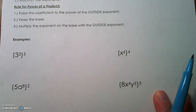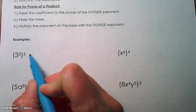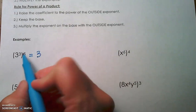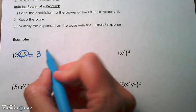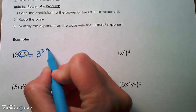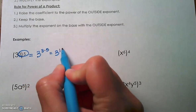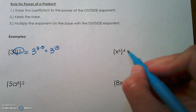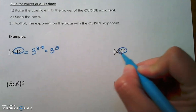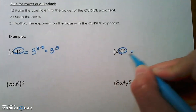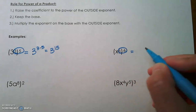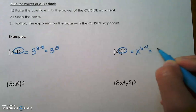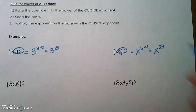This is a simple power to a power. We keep the base and multiply the exponents: 3 times 5 gives us 3 to the 15th power. Next example: we multiply the outside exponent times the inside exponent. There's no coefficient, so we don't have to do anything there. Keep the base — 6 times 4 gives us x to the 24th.